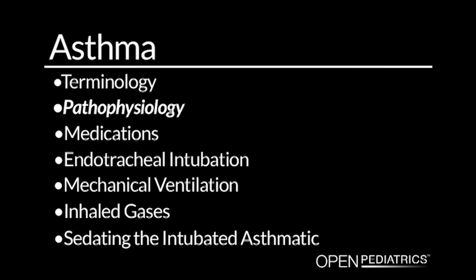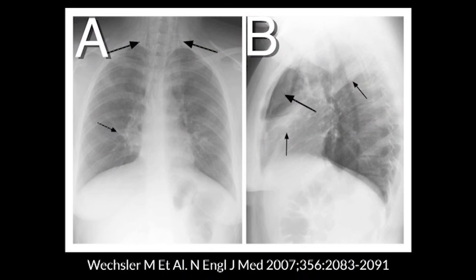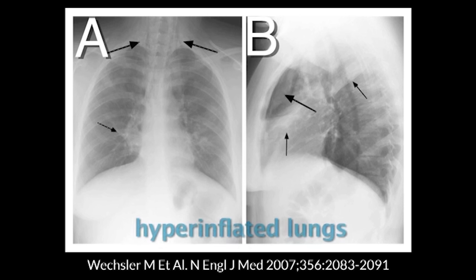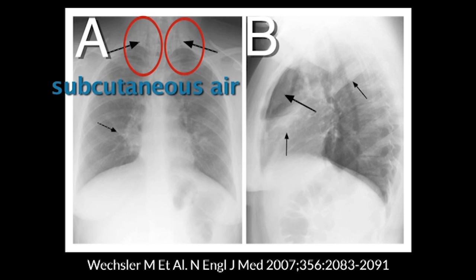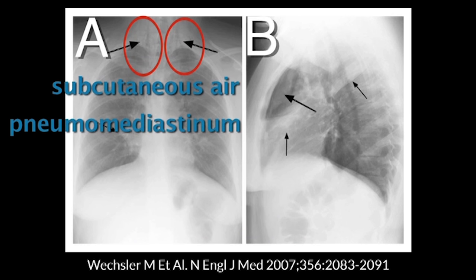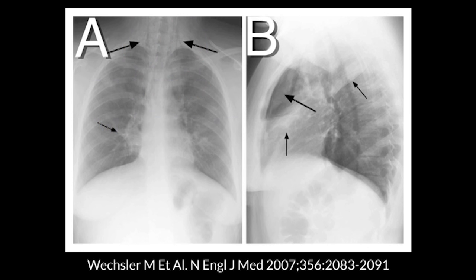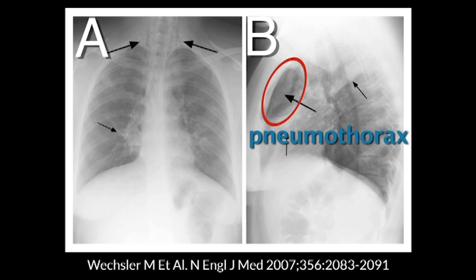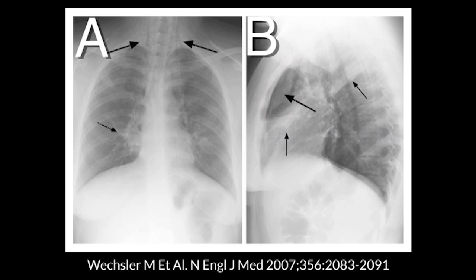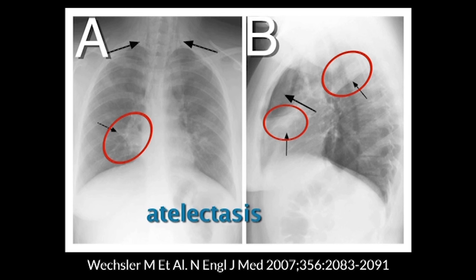Pathophysiology. I want to show you a chest radiograph from a New England Journal review article. On panel A, you see a chest X-ray AP with very hyperinflated lungs, typical in asthma. The big arrows show some subcutaneous air associated with possible pneumomediastinum. On panel B, the big arrow shows a large anterior pneumothorax — both complications seen in patients with severe asthma in the ICU. Note also the areas of atelectasis pointed out by the small arrows.